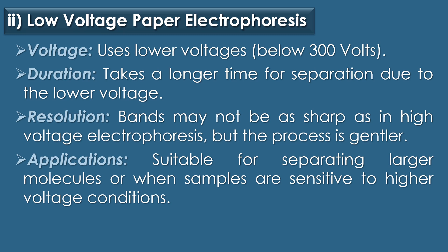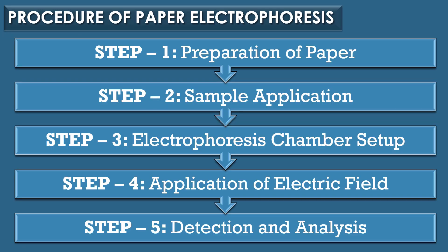The second type is low voltage paper electrophoresis, which uses lower voltages, typically below 300 volts. It takes a longer time for separation due to the lower voltage. Bands may not be as sharp as in high voltage electrophoresis, but the process is gentler. It is suitable for separating larger molecules or when samples are sensitive to higher voltage conditions.